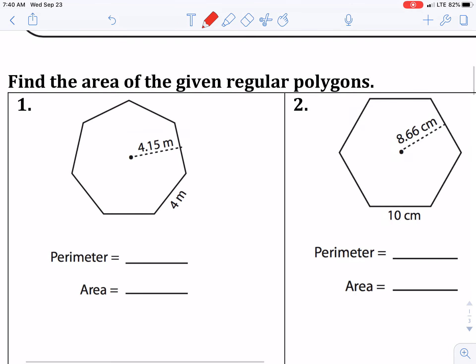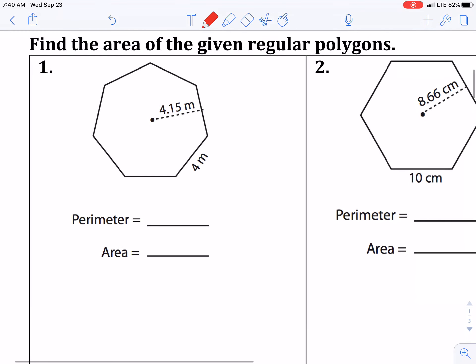All right, so just starting with number one, we want to find the area of the regular polygon. Again, regular just means all the sides are the same, and then all the angles are also the same measure to each other. So our formula is apothem times perimeter divided by two.